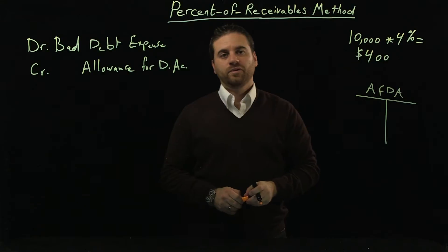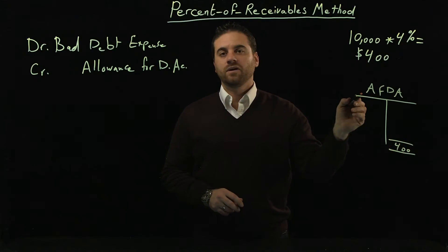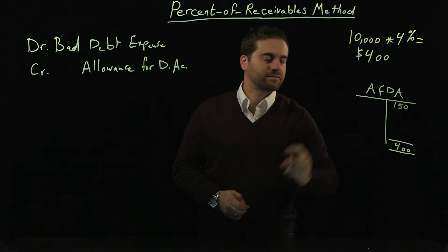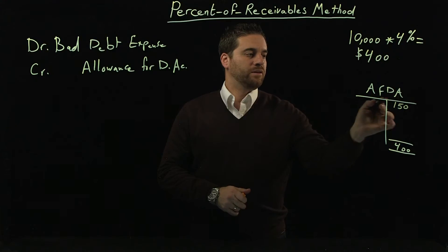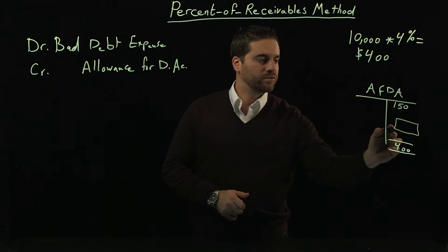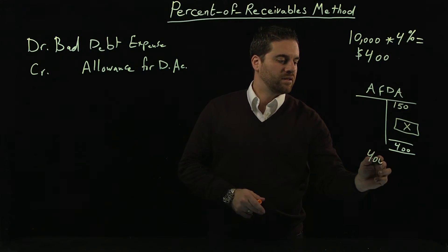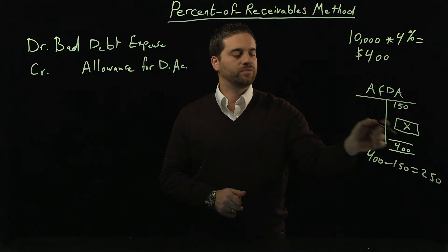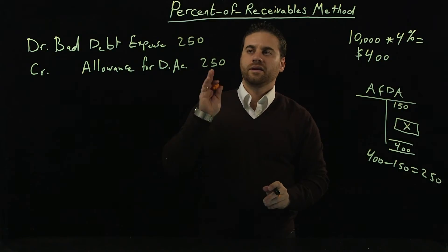Let's make a T-account here for the allowance for doubtful accounts (AFDA). Before knowing that it's going to be a $400 credit balance at the end of this year, we have to know what the ending balance was before the adjusted balance. Let's say it used to be $150 credit balance — most probably carried over from the previous period. So it used to be $150 and it has to go all the way up to $400. How much do we have to add? $400 minus $150 equals $250. So we have to add $250 to the AFDA to make it $400. That's where a lot of students make mistakes — it's not $400, it's $250.